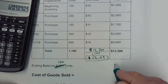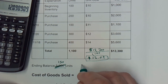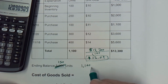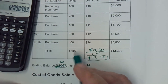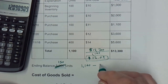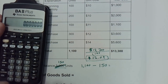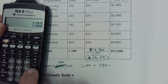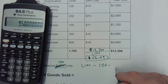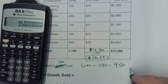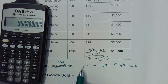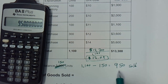So we want to see how many units we sold. We had 1,100 units available for sale — that was the beginning balance plus all the units purchased — and we have 150 units remaining at the end, which are the unsold ones. So it's 1,100 minus 150, which leaves us 950 units sold. We got it from total units available for sale minus our ending balance.